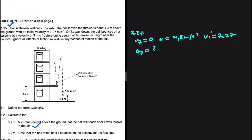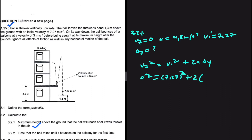With these four variables, we're going to use the equation: vf squared equals vi squared plus 2a delta y. vf is zero, vi is positive 7.27 — taking up as positive. So: 0 equals 7.27 squared plus 2 multiplied by negative 9.8 multiplied by delta y. Rearranging gives us negative 7.27 squared equals negative 19.6 delta y.